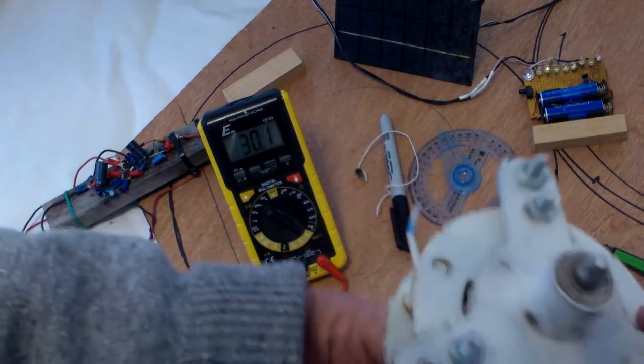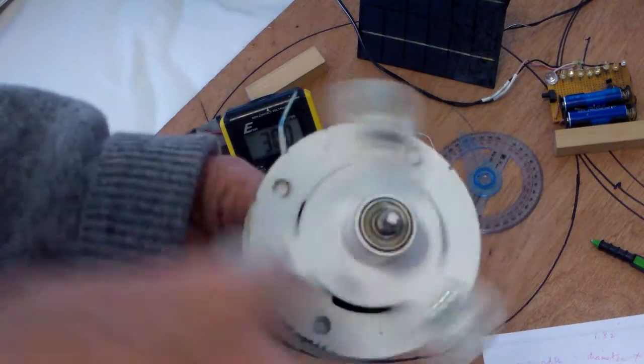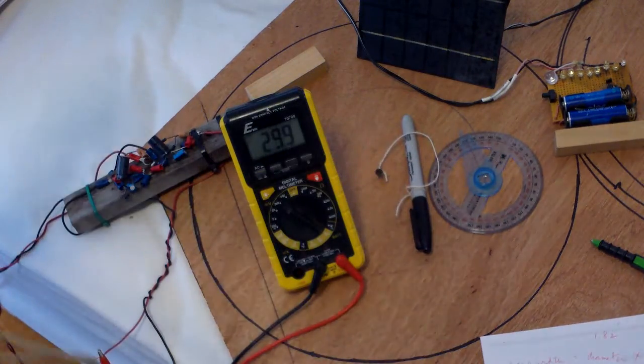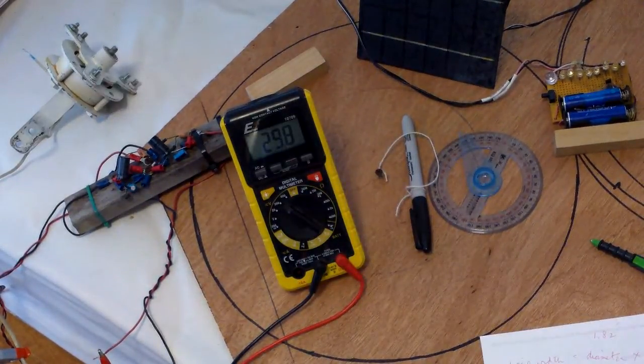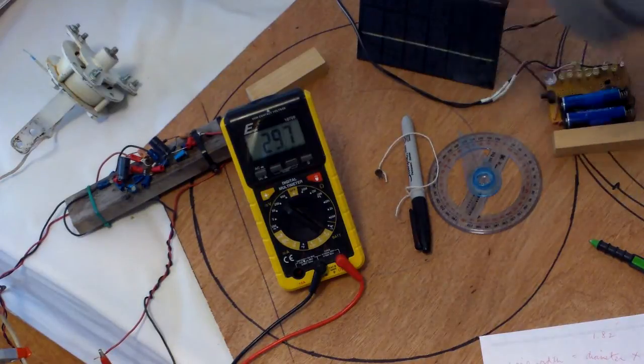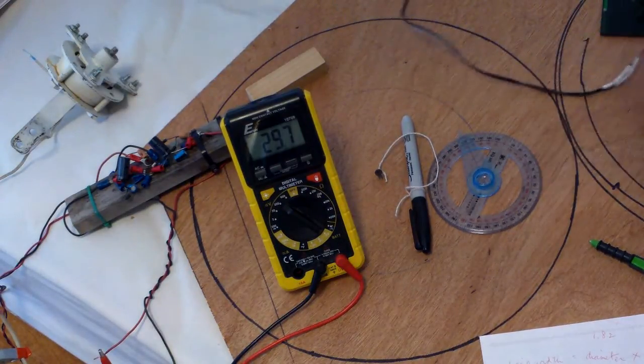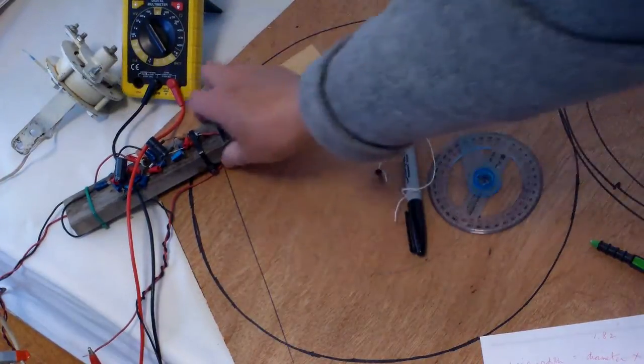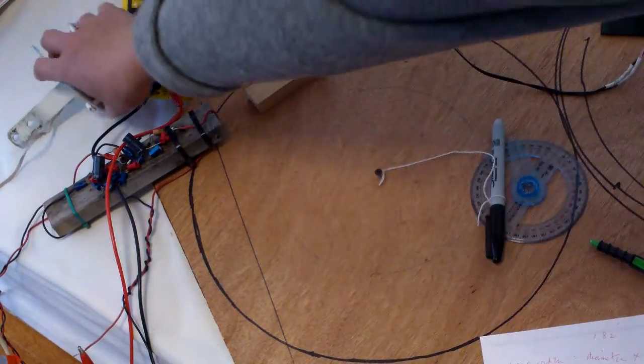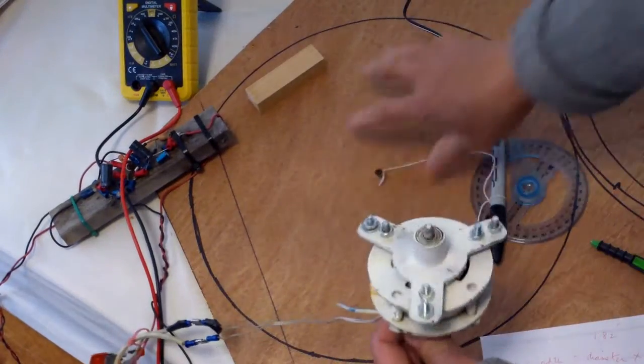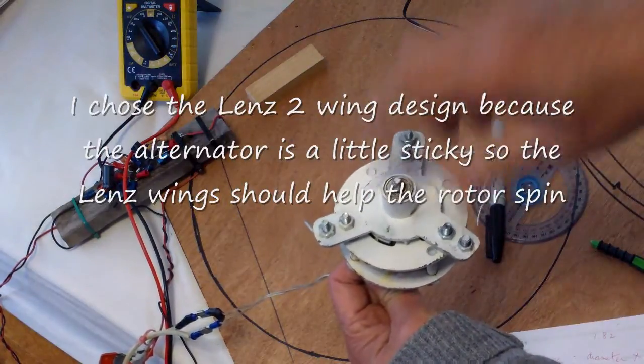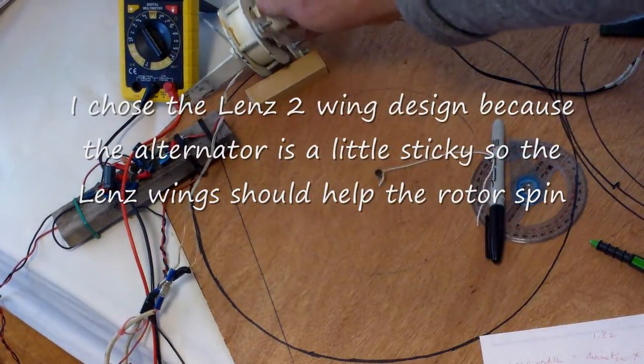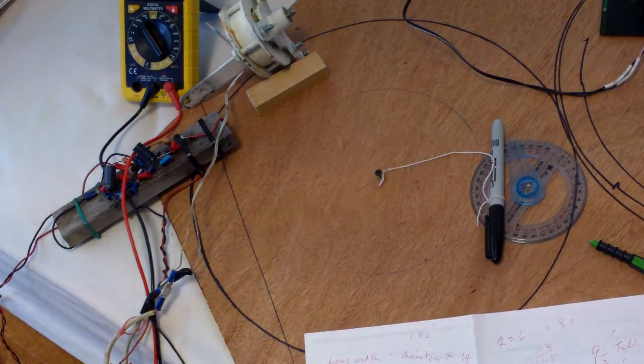So theoretically, even when it is turning relatively slowly, it should generate a few volts which should be sufficient to charge a small solar light. Right now I'm in the process of making the rotor which will sit on top of this metal arm here.